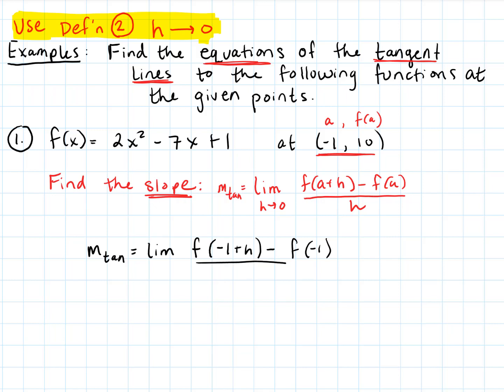So we're going to take the slope of the tangent line as the limit of f of negative 1 plus H minus f of negative 1, all over H as H approaches zero. We do know that f of negative 1 is 10. So we could plug that in — or if we didn't know that, we'd just evaluate f of negative 1 to find it equals 10.